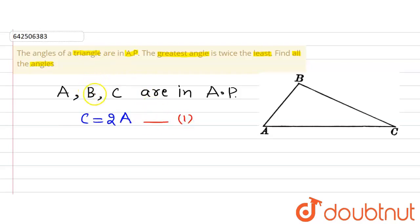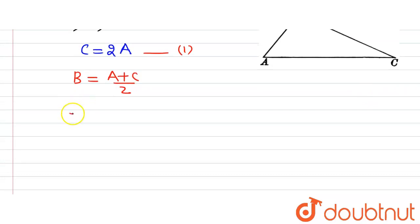We also know a relation that the middle term of an AP will be equal to the mean of these two terms. That is, B will be equal to A plus C divided by 2, because ABC are in AP. On solving it, we will get twice of B is equal to A plus C.